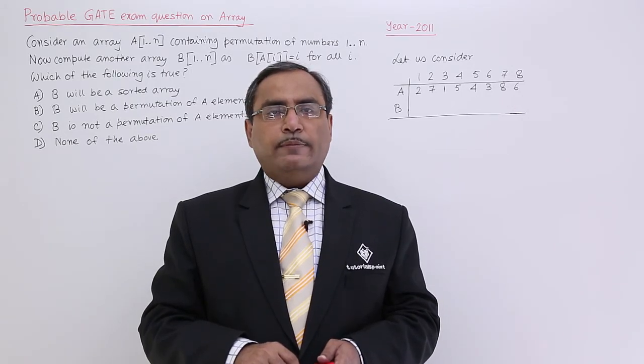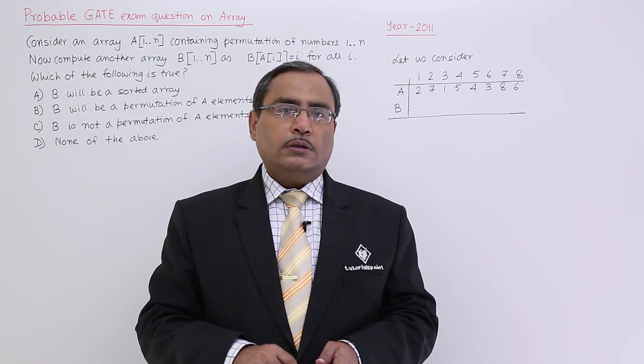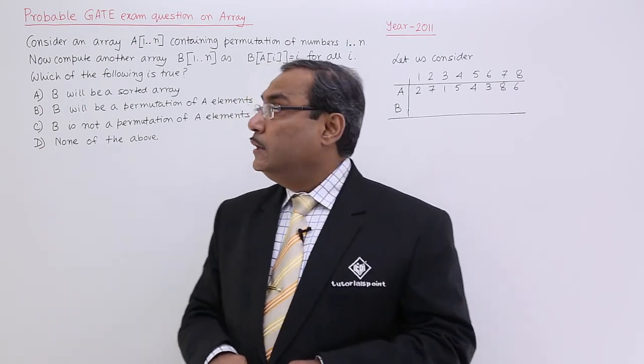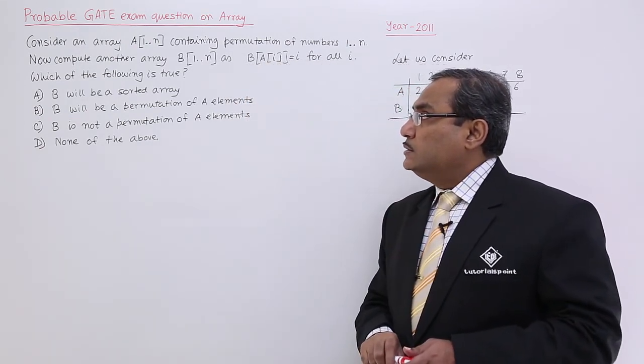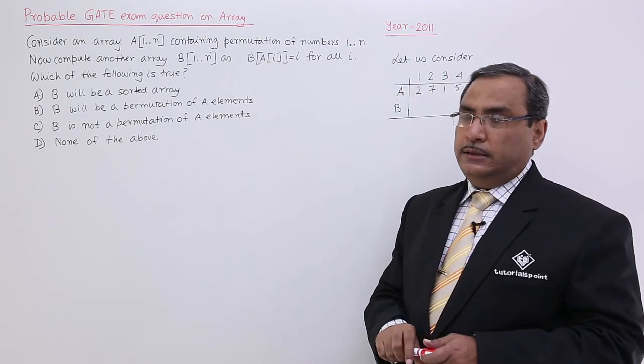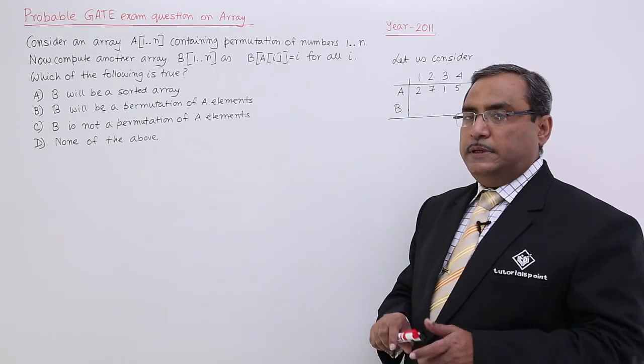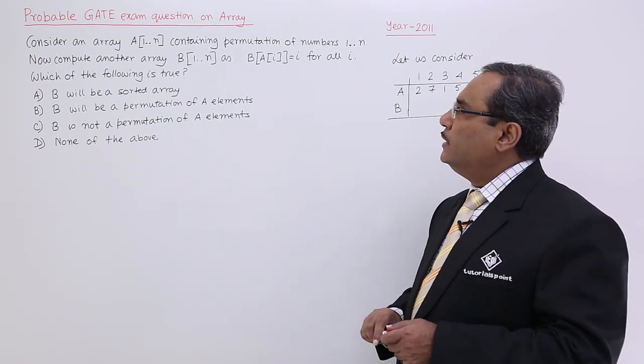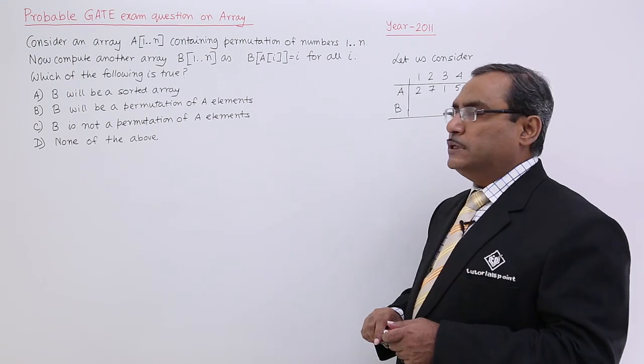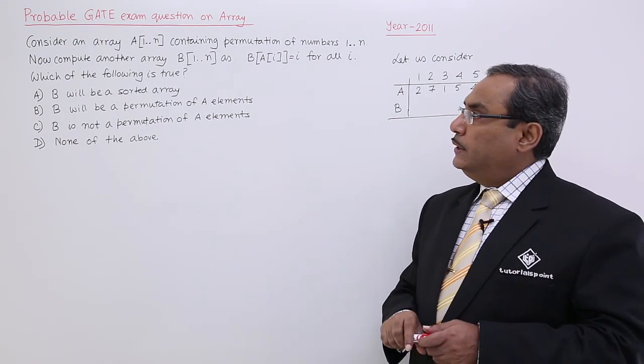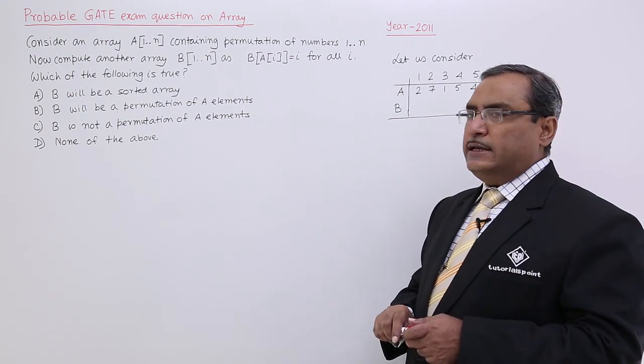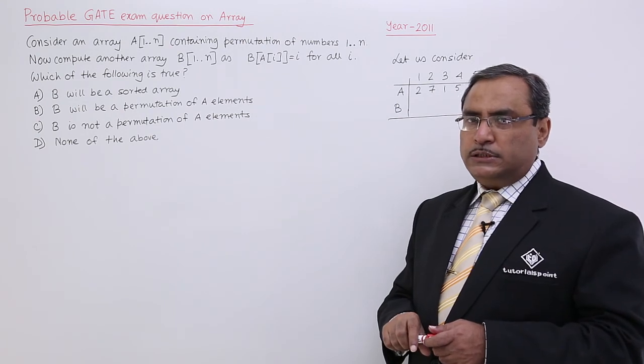Let us solve one GATE 2011 question on the topic array. The question is like this: Consider an array A[1...n], that means n number of locations are there, containing permutation of numbers 1 to n. That means this particular array is containing permutation of the numbers 1 to n.